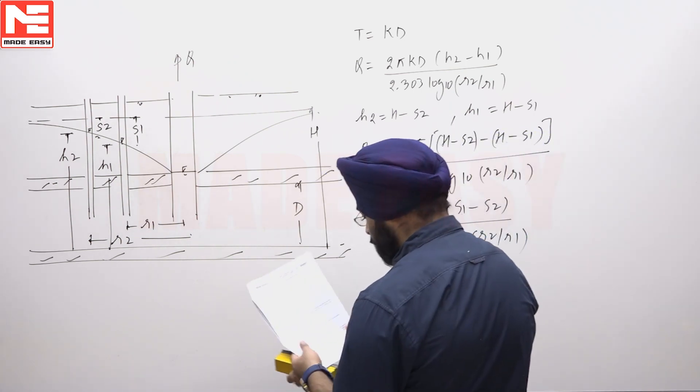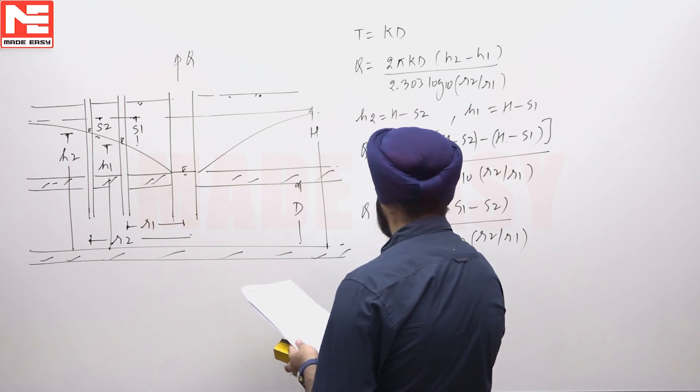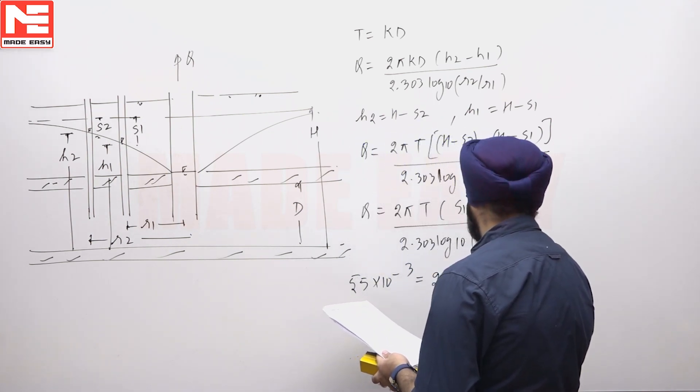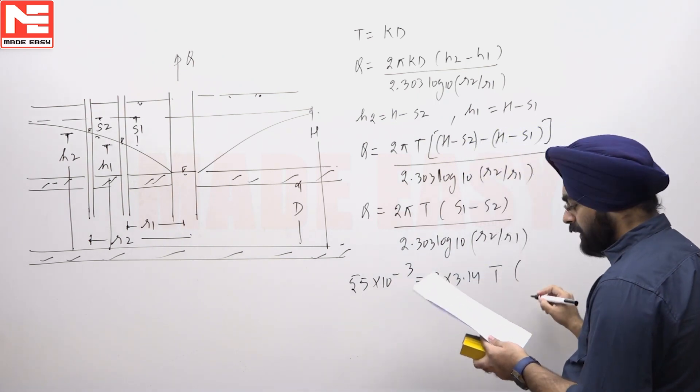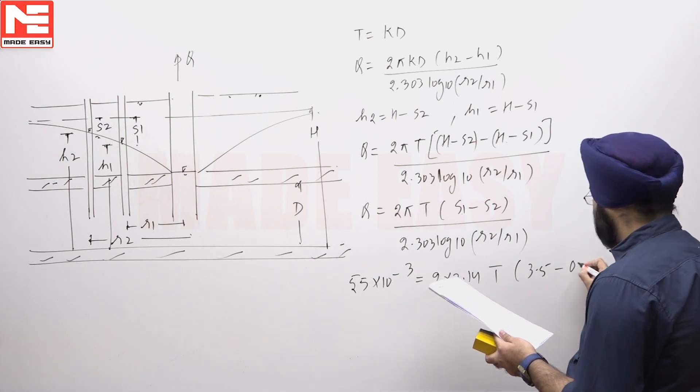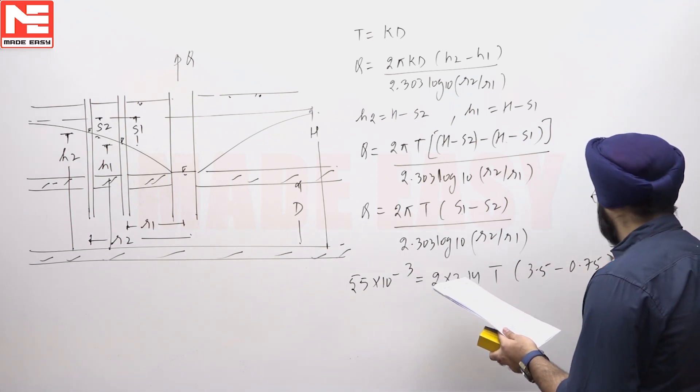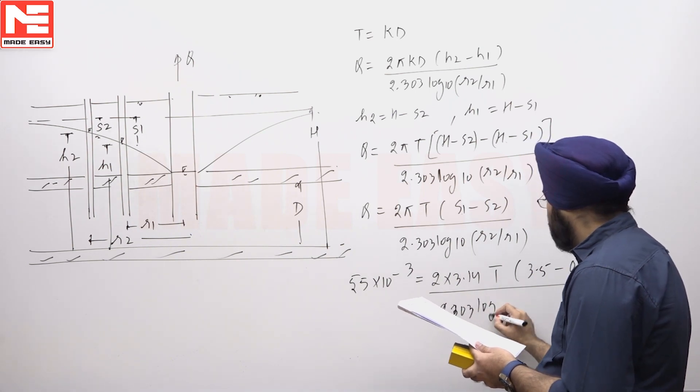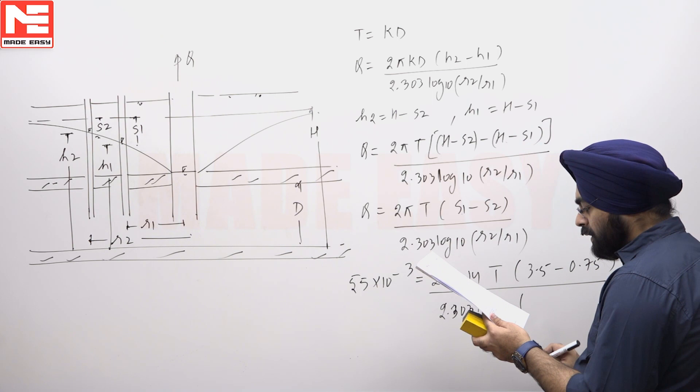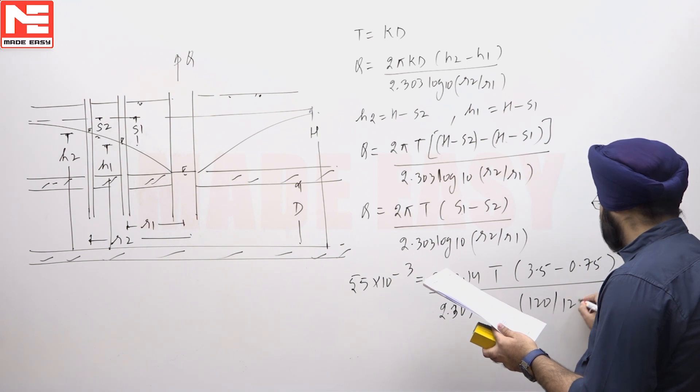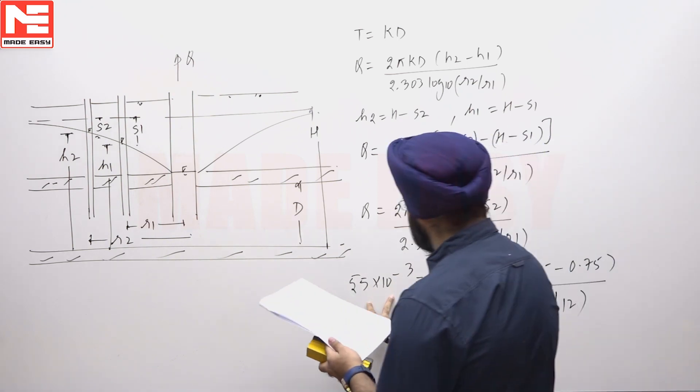If we substitute the values, discharge is given to be 55 liters converted into meter cube, 2 into π 3.14 transmissibility is to be found. Drawdown in the first observation well is 3.5 meters. Second observation well 0.75 meters divided by 2.303 log₁₀, R2 is given to be 120 meters, R1 is given to be 12 meters. Discharge now is in meter cube per second.